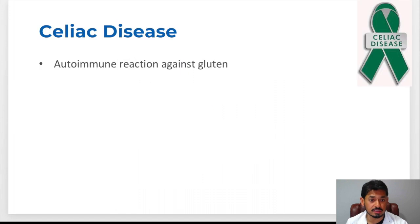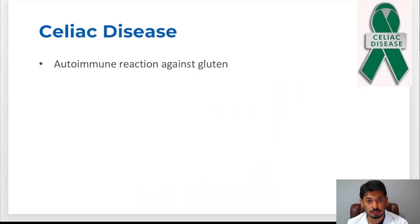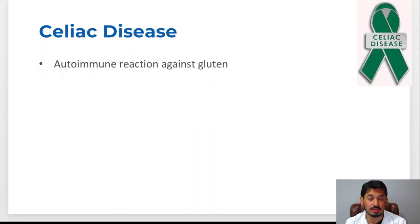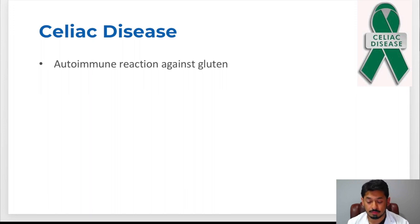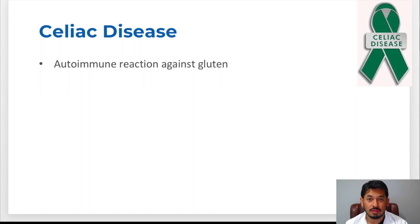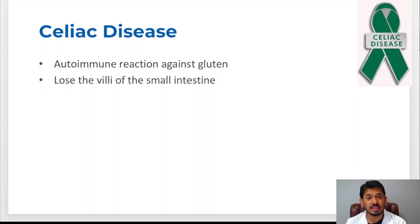When we talk about celiac disease, celiac disease is considered an autoimmune reaction against gluten. Gluten is a protein found in wheat that holds wheat together, and whenever you ingest gluten it is an autoimmune reaction against that particular product. That causes a reaction within the body because your body attacks the particles associated with gluten and causes some damage to your small intestine. The damage is actually loss of the villi of the small intestine.